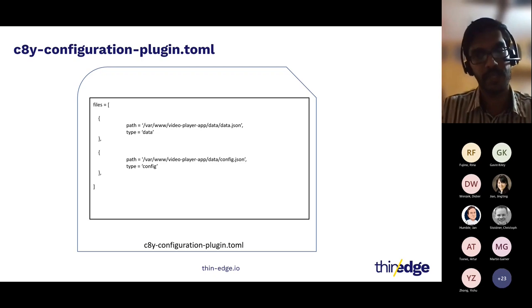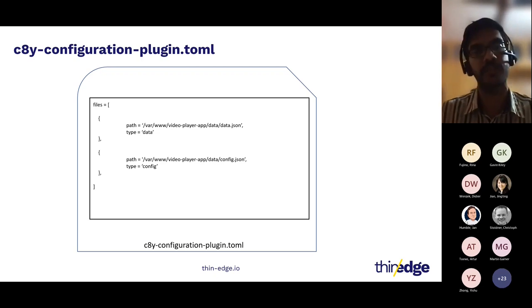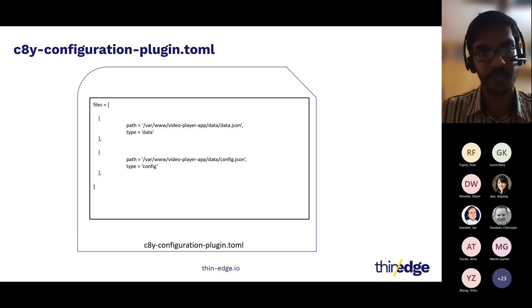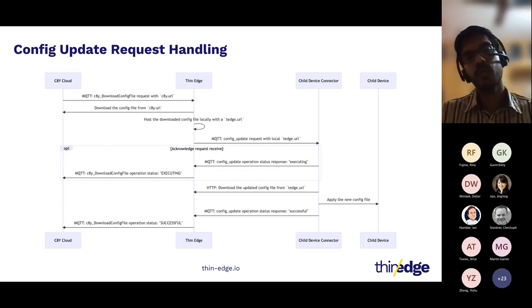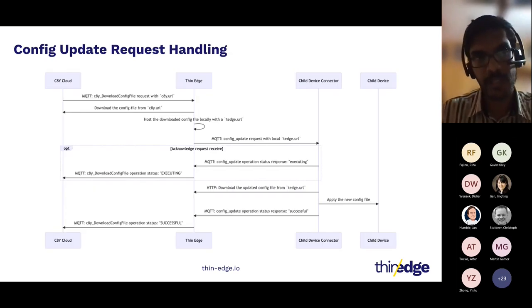Looking at the configuration TOML file the connector needs to prepare: it's a TOML file with a list of file entries. Each entry has a filesystem path where the configuration file can be found, and a type which is a unique ID to uniquely identify that configuration file. This is a familiar format for those who know Thinage's own configuration management, as Thinage uses the same file format.